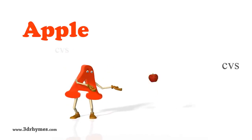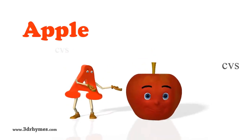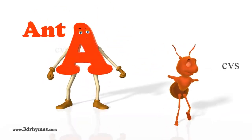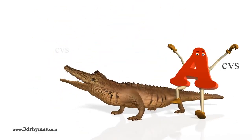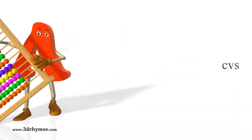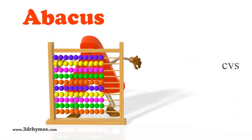A is for Abel. A is for Ant. A is for Alligator. A is for Abacus.